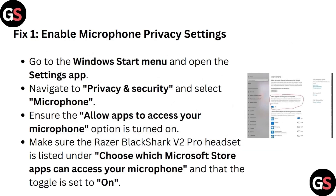Step 1: Enable microphone privacy settings. Go to Windows Start menu and open the Settings app. Navigate to Privacy and Security and select Microphone. Ensure that the 'Allow apps to access your microphone' option is turned on. Make sure the Razer Blackshark V2 Pro headset is listed under 'Choose which apps can access your microphone' and that the toggle is set to on.